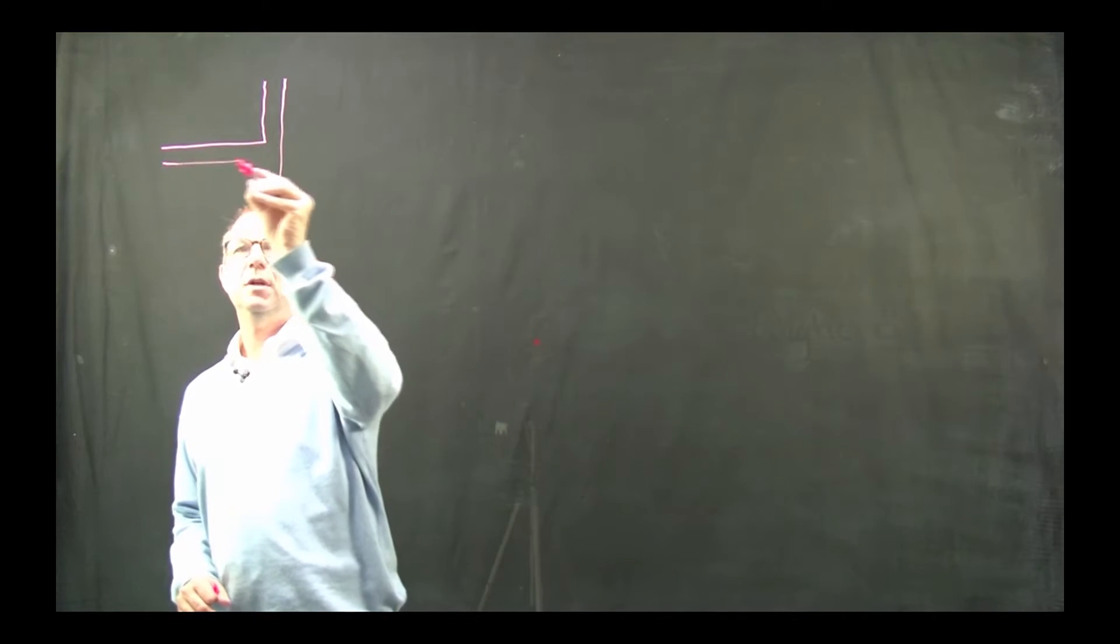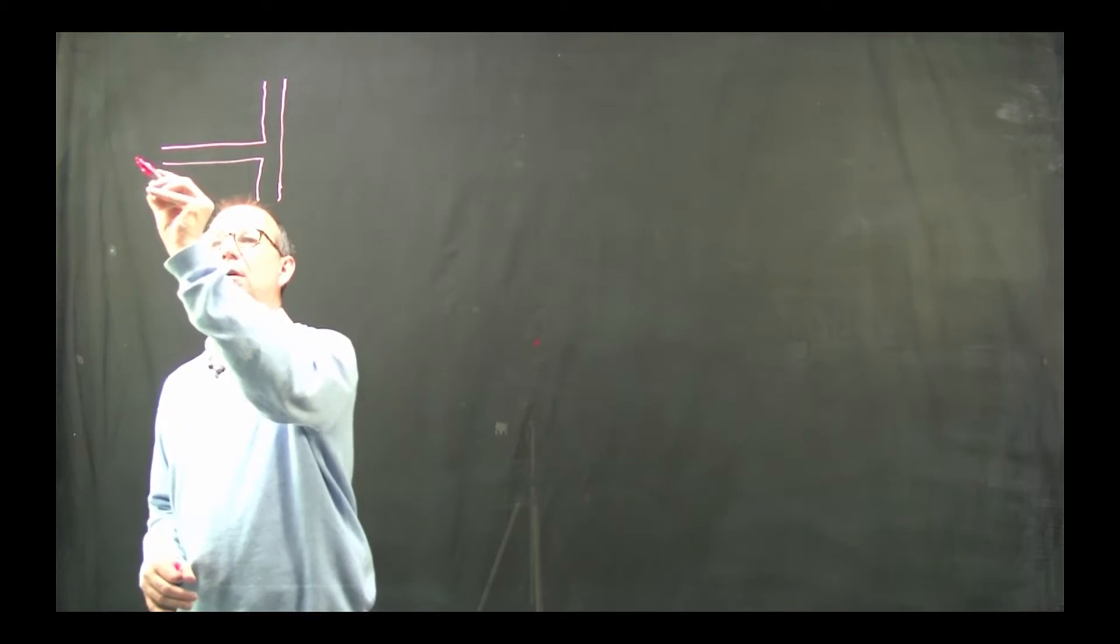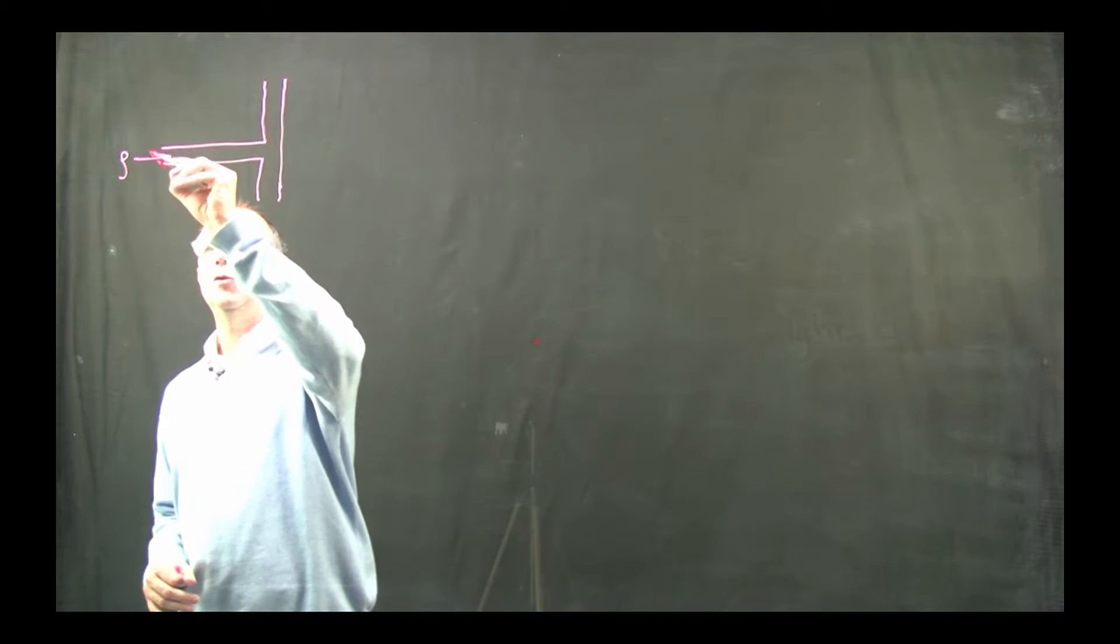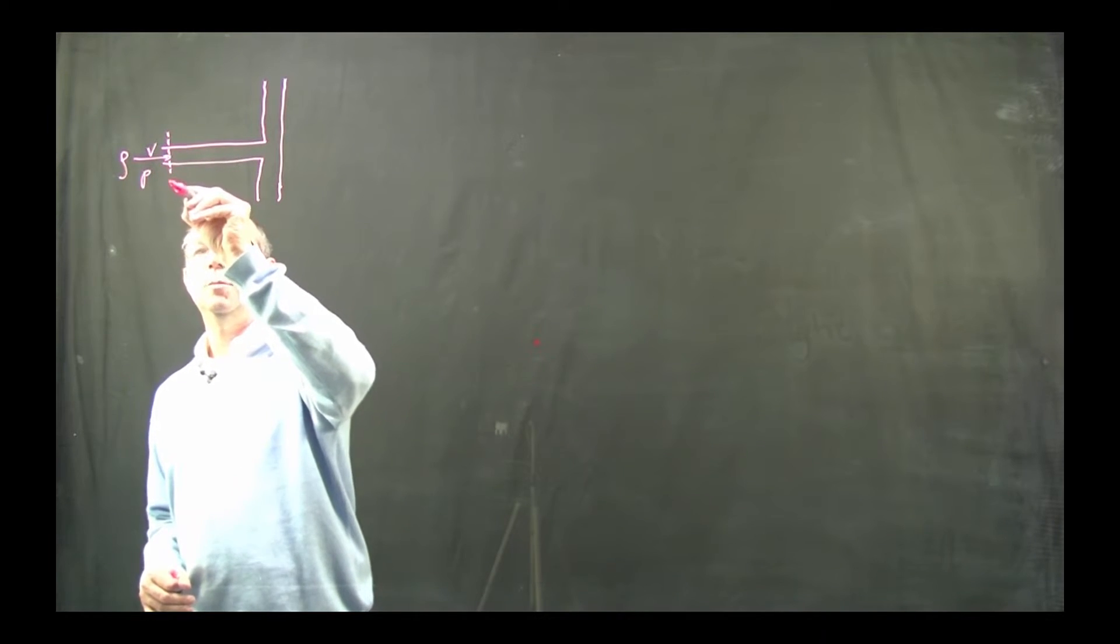So what we have is a tube that has this shape. A liquid, say water, is coming in at a velocity v at a pressure p through this opening which I mark with 1.